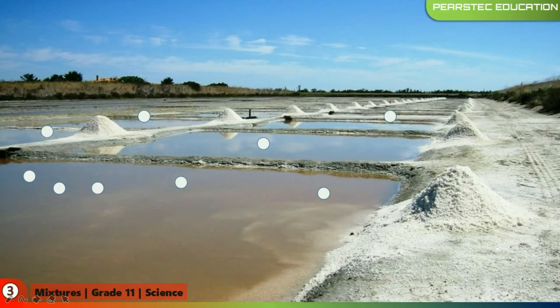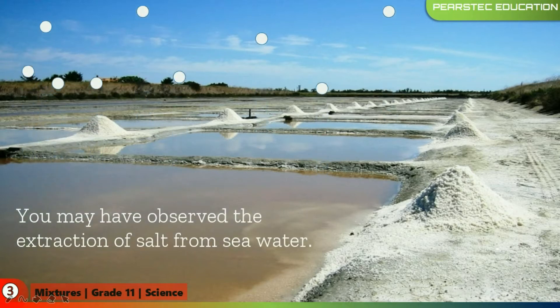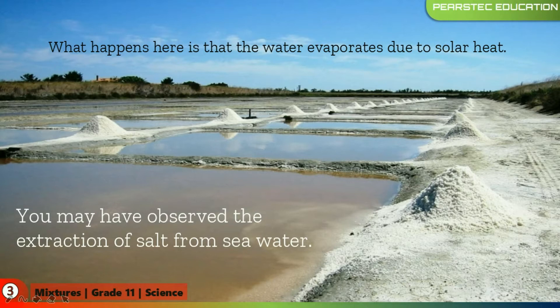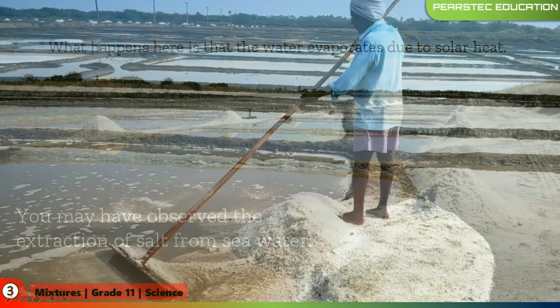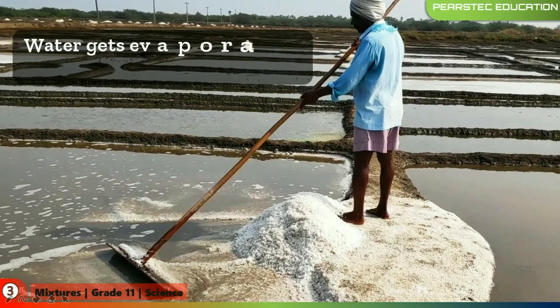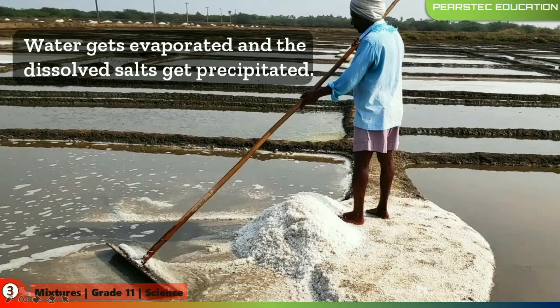Last time when we were ending the video session, I was asking you a question about sand and the sugar mixture and how you are going to separate that. Let's see whether we can get some clues from this session. Here you can see a beautiful land in front of you. You may have observed the extraction of salt from seawater. What happens here is that the water evaporates due to solar heat — under the sunlight, the seawater gets evaporated and the salt remains. Water gets evaporated and the dissolved salts get precipitated, and that precipitated salt you can extract.